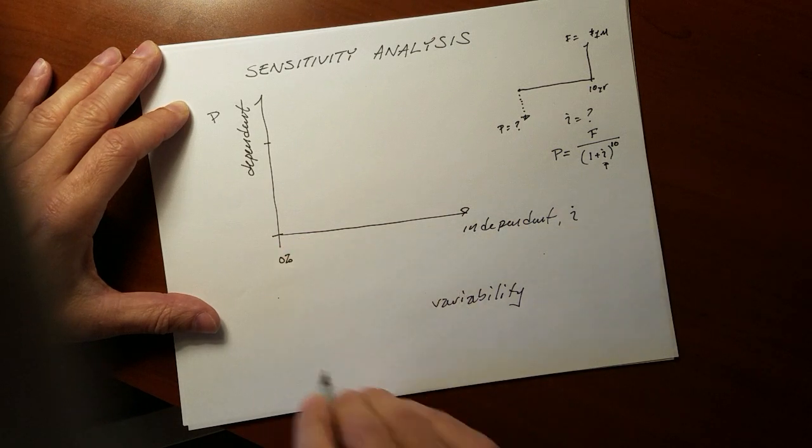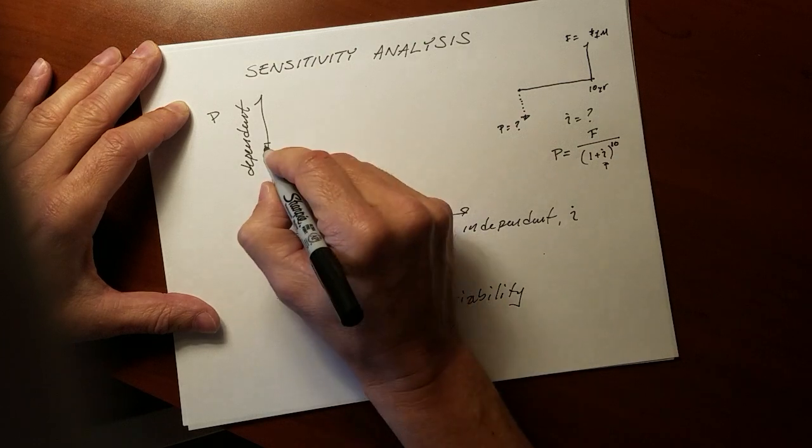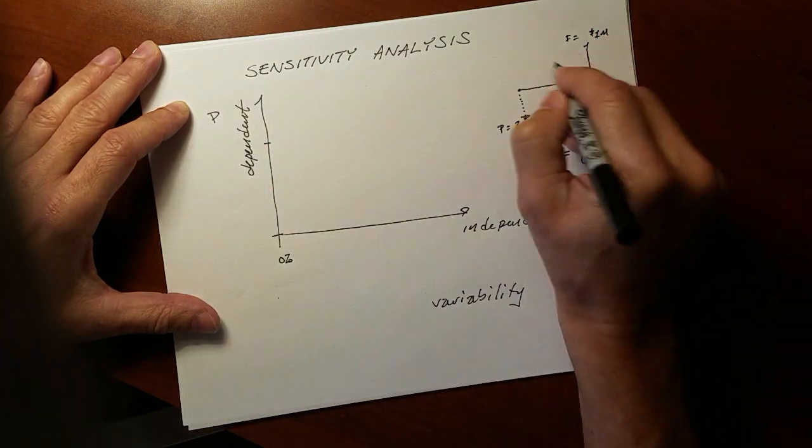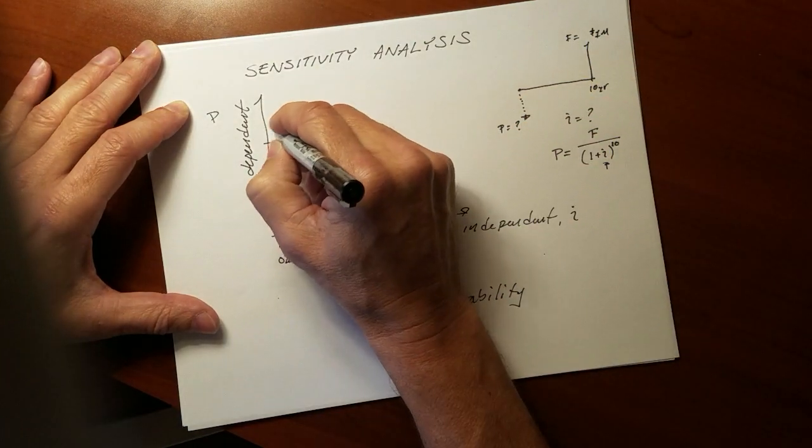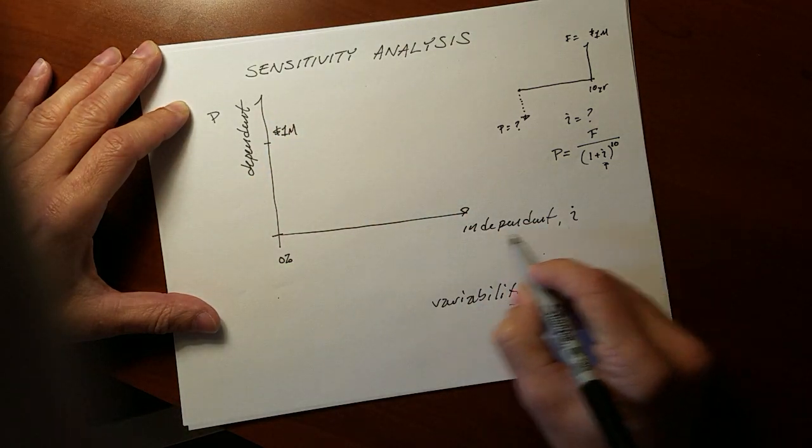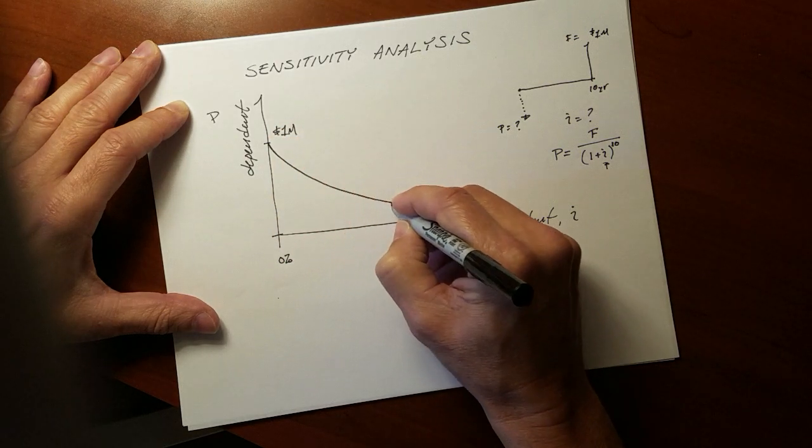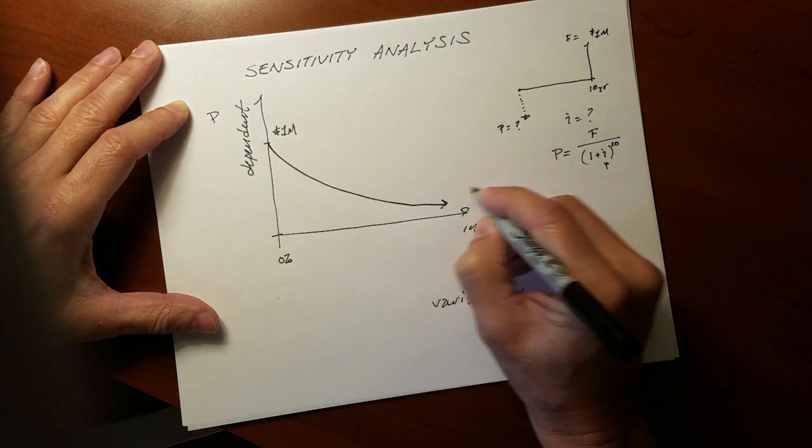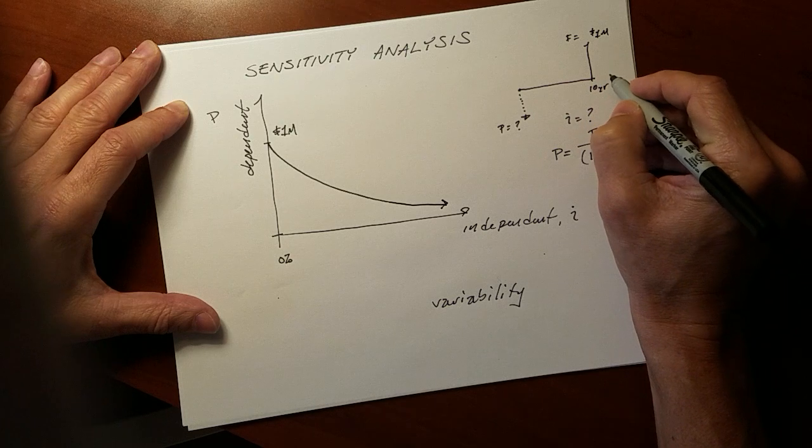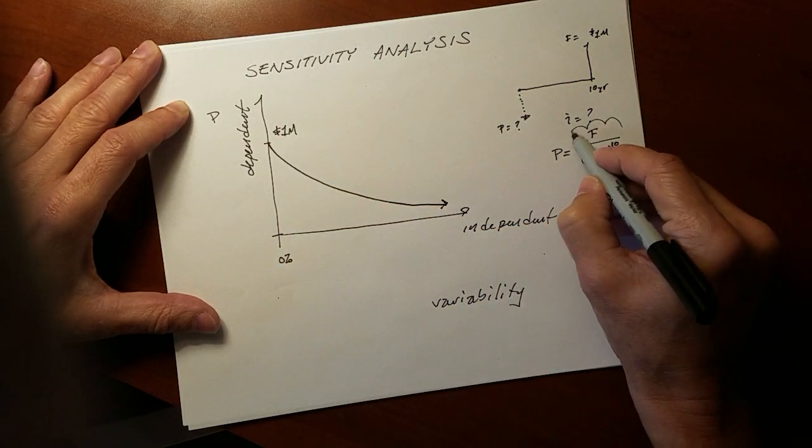If I, the discount rate, were 0%, then students of engineering finance understand that the future value is the same as the present value, which would be 1 million dollars. But as I increases, the present value of this future payment in 10 years decreases in accordance with this function.